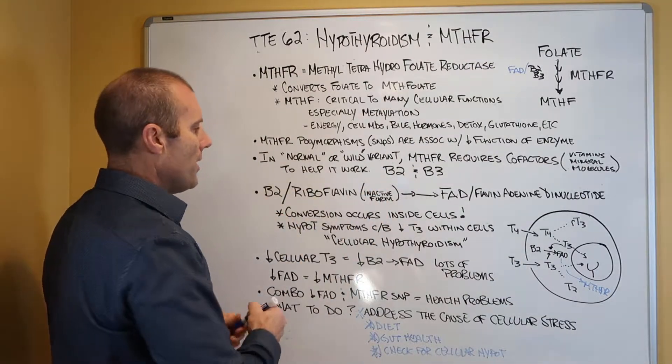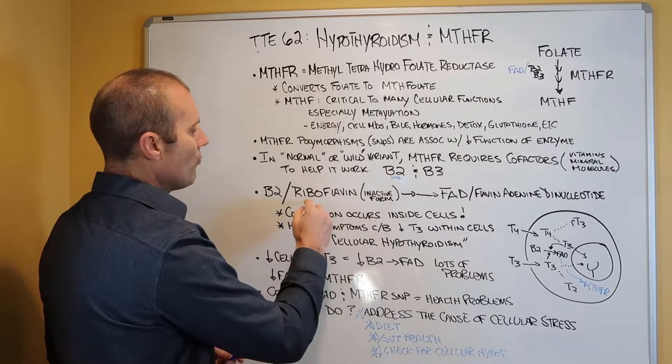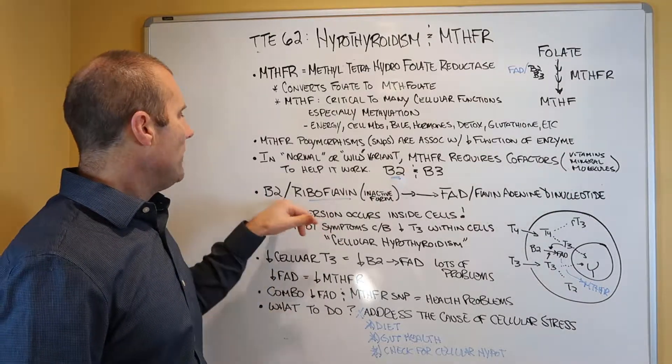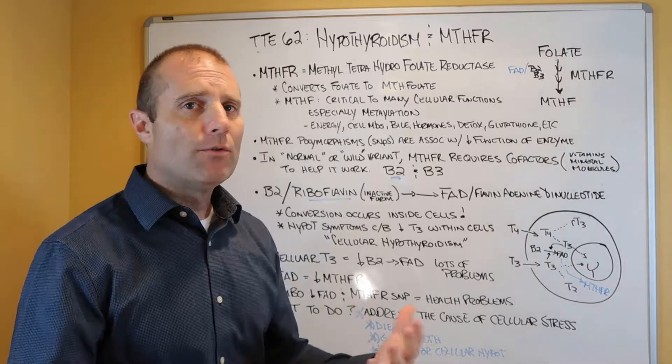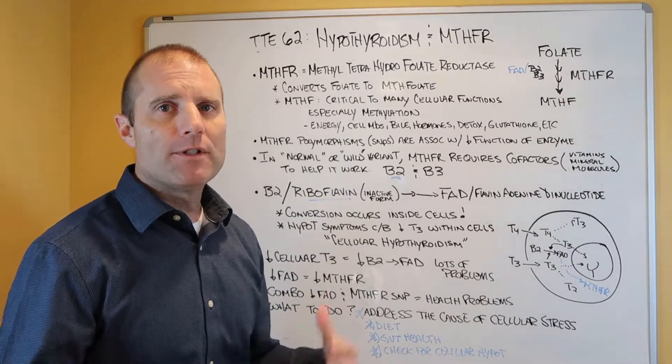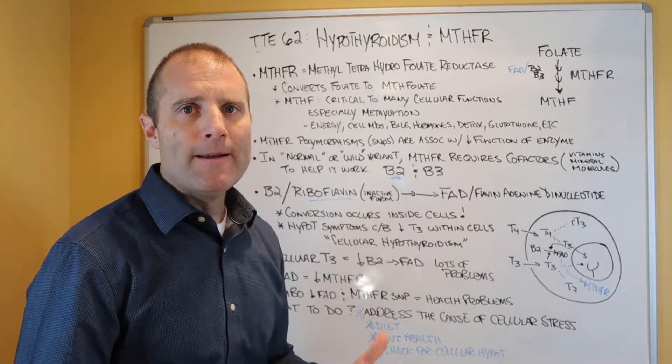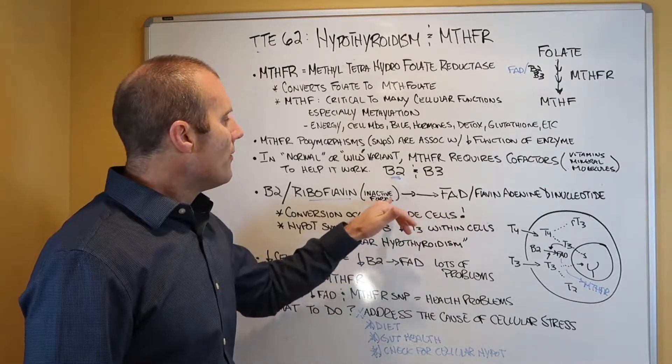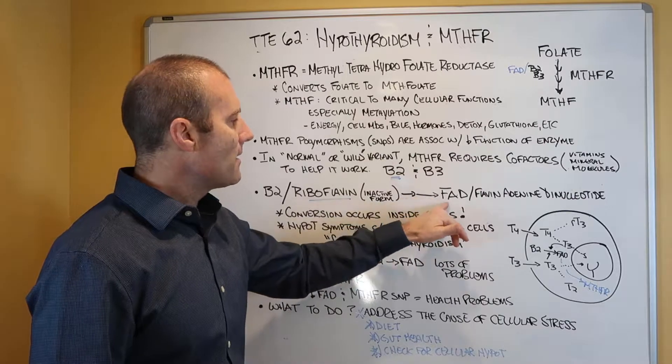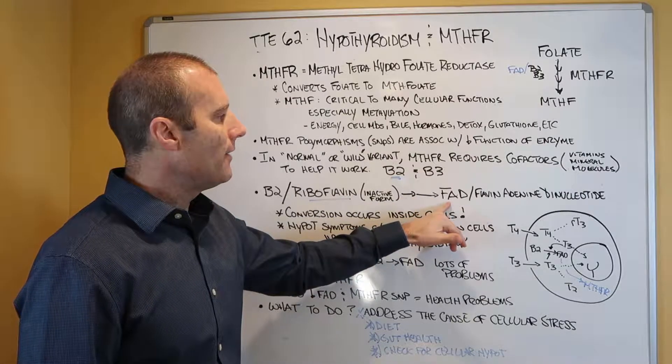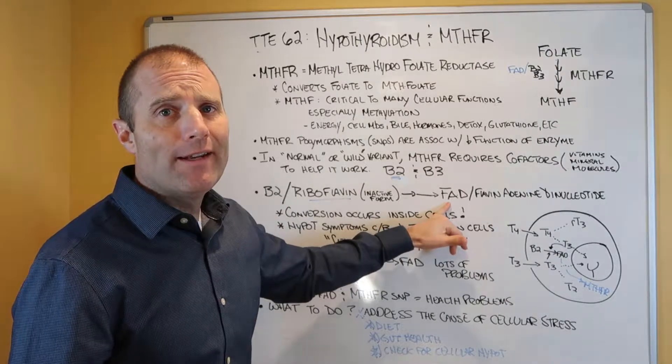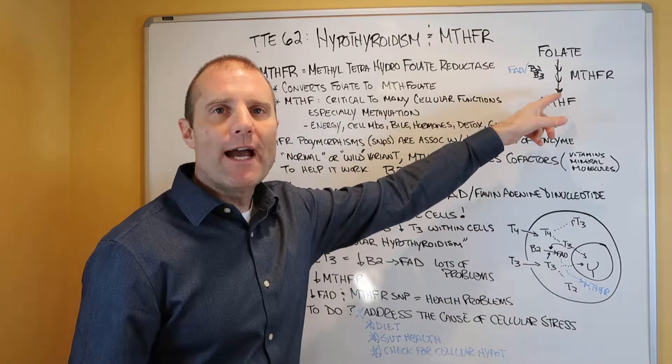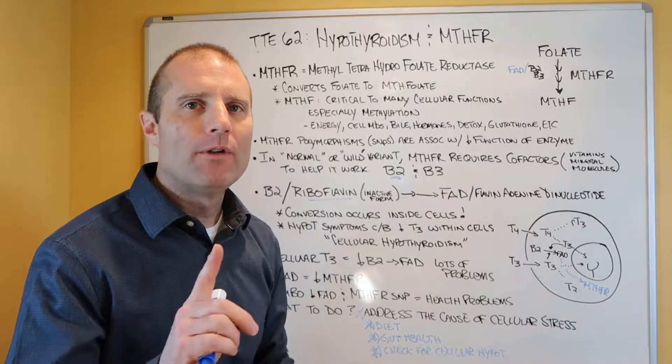B2 is what we really want to talk about today. B2 is also known as riboflavin. Essentially, this is a less active or inactive form of B2. What happens is you eat foods that are high in B2 or you take your B2 supplement that has riboflavin in it. It goes into the GI tract. The GI tract absorbs it, and then the B2 has to be transported inside the cell. Once it's inside the cell, for the B2 to be functional, it has to be converted to the more active form, something called flavin adenine dinucleotide. We'll just call it FAD for short. It's actually FAD, not the riboflavin, that's used in this reaction. What does this have to do with thyroid hormone? I'm getting there.